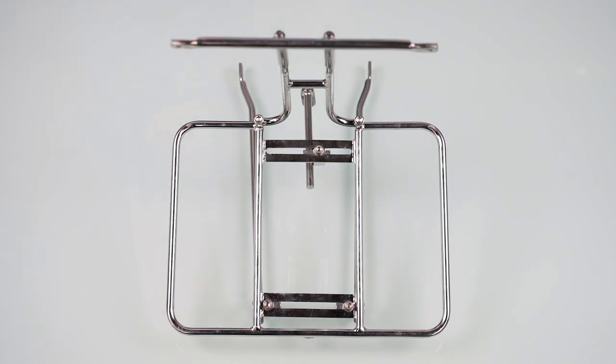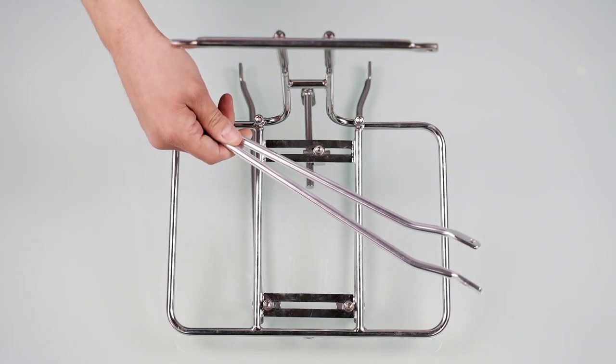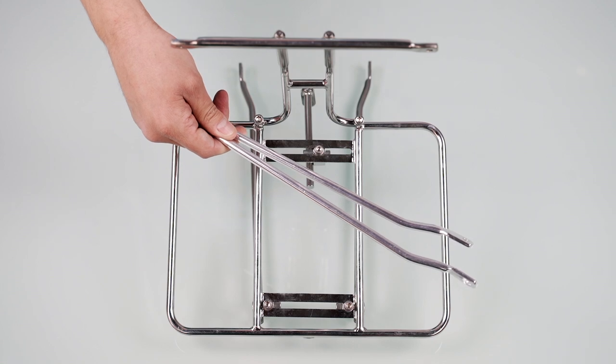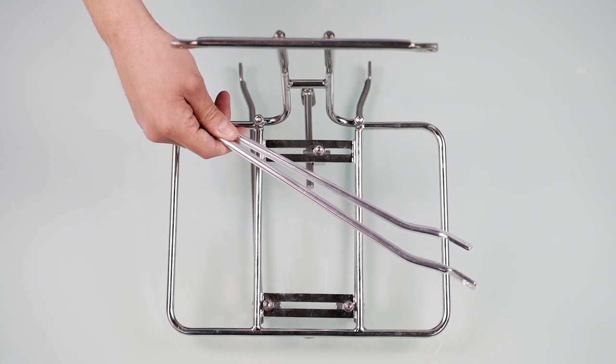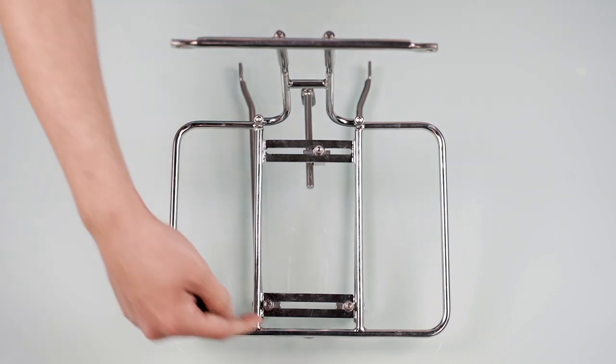The kit contains four adjustable aluminum alloy stays. Use two for a weight capacity of 12 pounds or use all four for a weight capacity of up to 17 pounds. Additionally, the front of the rack features a brazon for a light mount.